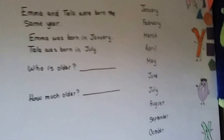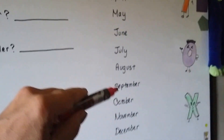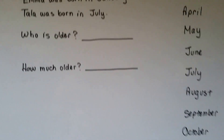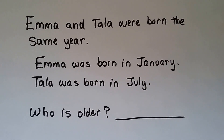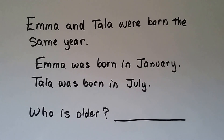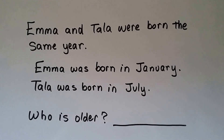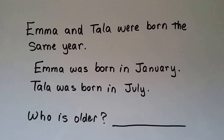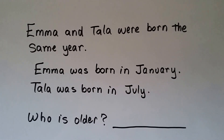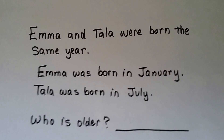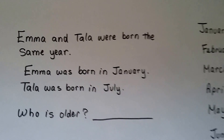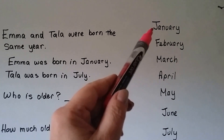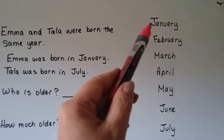Let's try some problem solving. Emma and Tala were born the same year. Emma was born in January and Tala was born in July. So who's older? They were both born in the same year — can you figure it out? Where's January? January is here, the first month of the year.